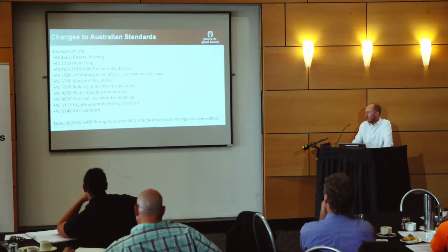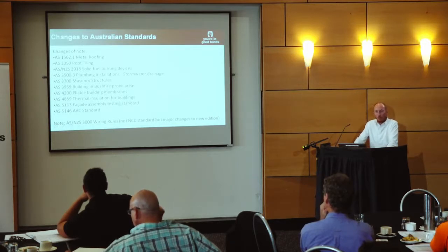Also AS 4200 pliable building membranes, AS 4859 thermal insulation for buildings, AS 5113 which is a facade assembly testing standard applicable to type A and B buildings in class 2 to 9, and changes to AS 5146 which is the AAC standard. I've also noted that AS/NZS 3000, the wiring rules standard, has had a substantial change. That document is not referenced in the NCC itself but it does affect residential buildings. We've produced an information sheet on those changes — as members you'll get free access and we're happy to resend it if you haven't received it.